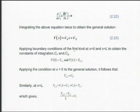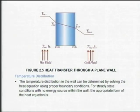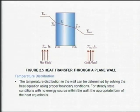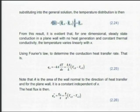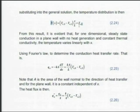Two boundary conditions are needed, and the easiest to deal with is temperature because it does not involve any derivatives. At the boundary x = 0, I specify constant surface temperature T_s1. At the boundary x = L, another constant temperature T_s2. The linear variation is shown by a straight line. T(x=0) = T_s1, T(x=L) = T_s2. When I solve, I get the temperature distribution in equation 2.24 — linear with a constant T_s1.